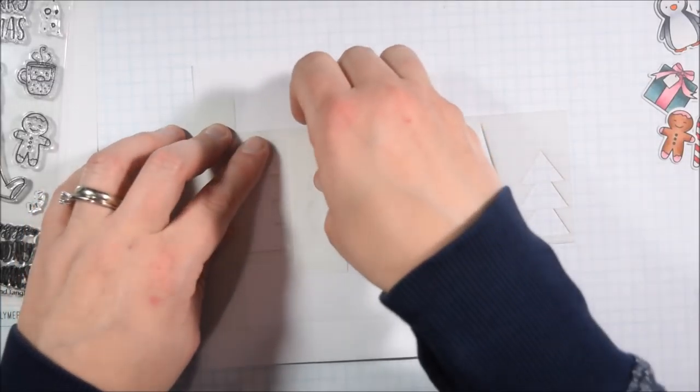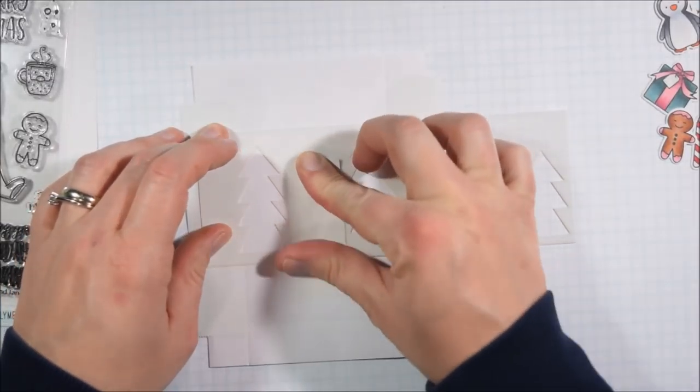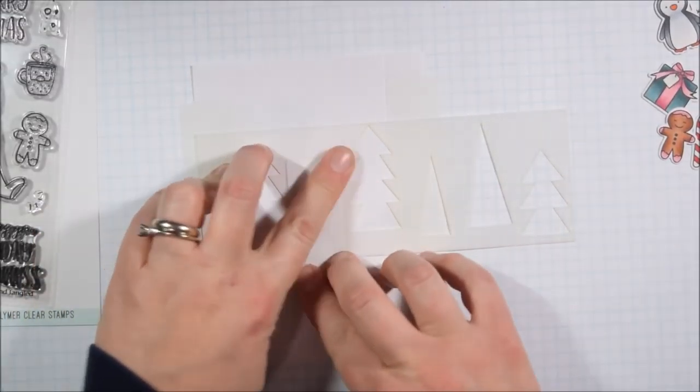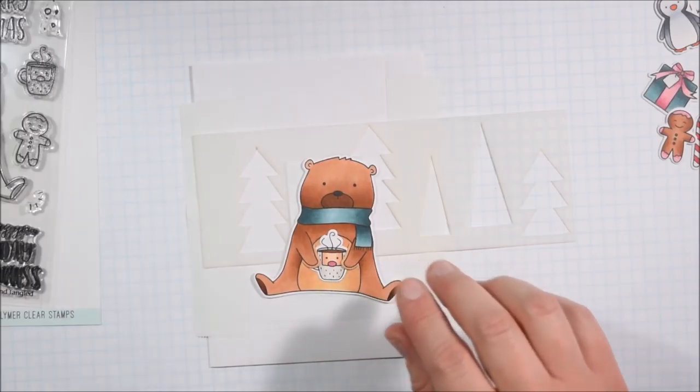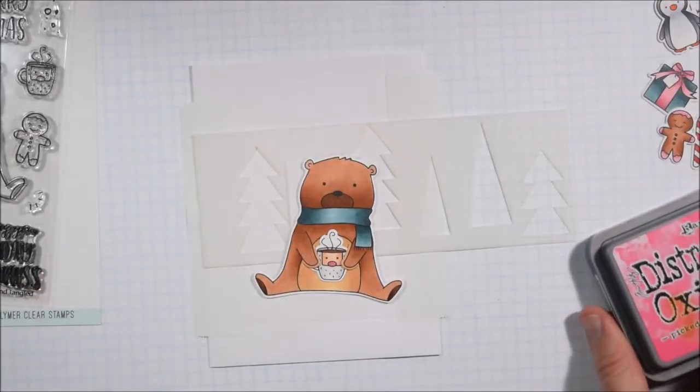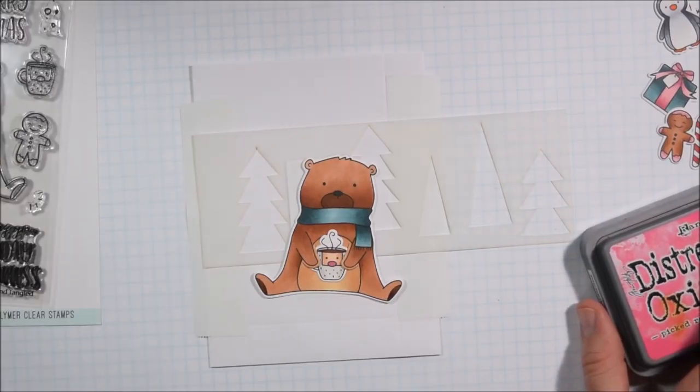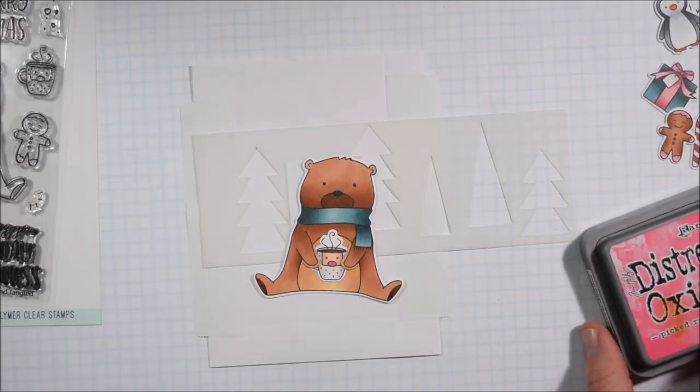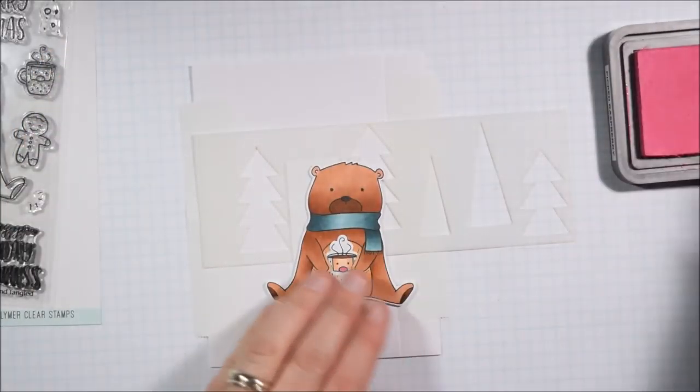So this tree stencil is also from Neat and Tangled. I am masking off the edges of the bag so that I'm only working on the front panel of the bag with some 3M post-it note tape. And I'm also using the post-it note tape to mask off the trees that I don't want so I'm only going to try to ink one tree at a time.